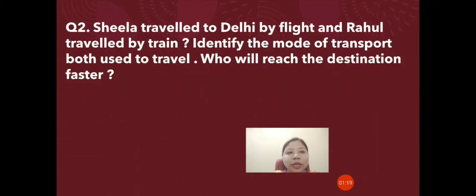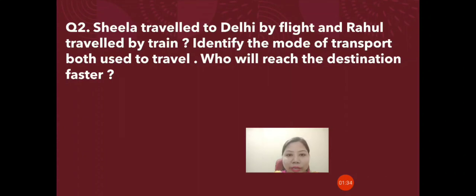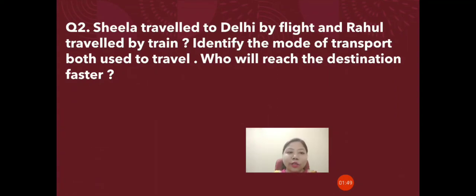Second question: Sheila travelled to Delhi by flight and Rahul travelled by train. Identify the mode of transport each used to travel. Who will reach the destination faster? Both Sheila and Rahul travelled to Delhi, one by flight and the other by train — you need to tell who will reach faster. I hope all of you will be able to answer these two questions.